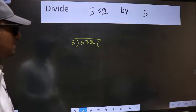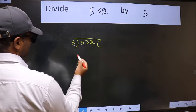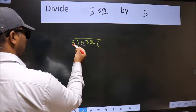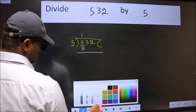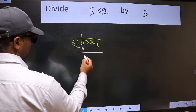Next, here we have 5 and here also 5. When do we get 5 in the 5 table? 5 once 5. Now we should subtract. We get 0.